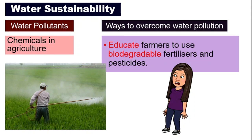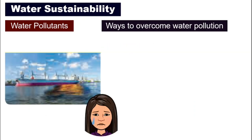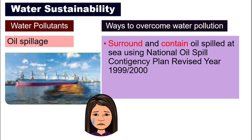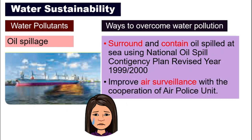And finally, oil spillage, especially from big boats or ships. We can try to overcome that by surrounding and containing the oil at sea using the National Oil Spill Contingency Plan, revised in 1999 and 2000. We can also get help from air police units so they can patrol and watch the sea.